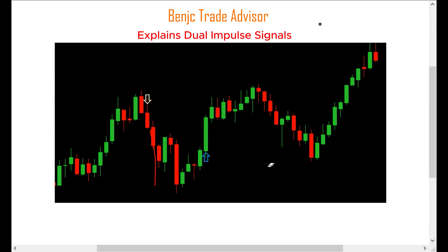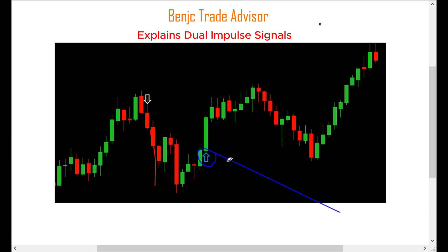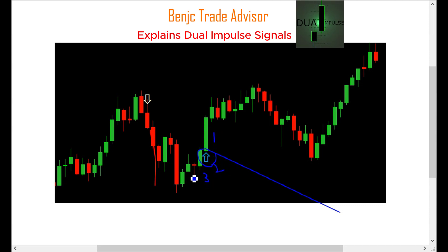Hello traders. Soon after receiving signals from Dual Impulse, you have to do this. Let me start with the buy signal. This is my buy signal. As soon as I receive the signal, I have to count — one, two, three, four — I have to count five candles back from the signal candle. Those candles are the source of everything. My signal candle is the one pointed by the arrow — candle number one.